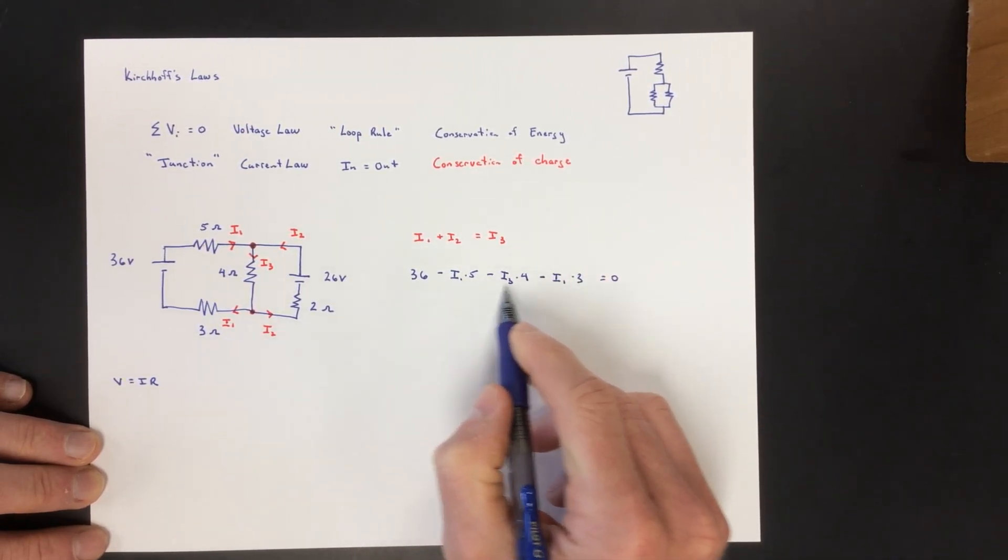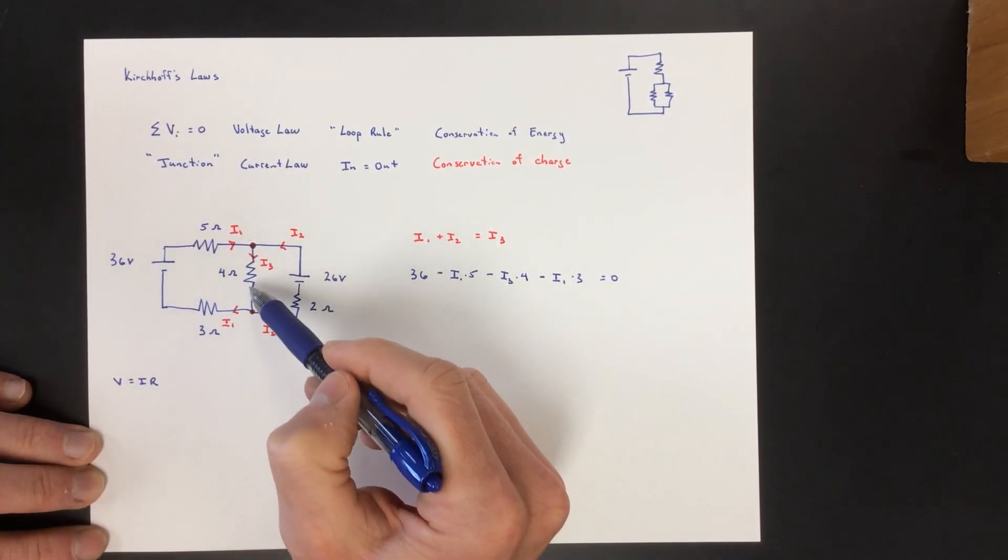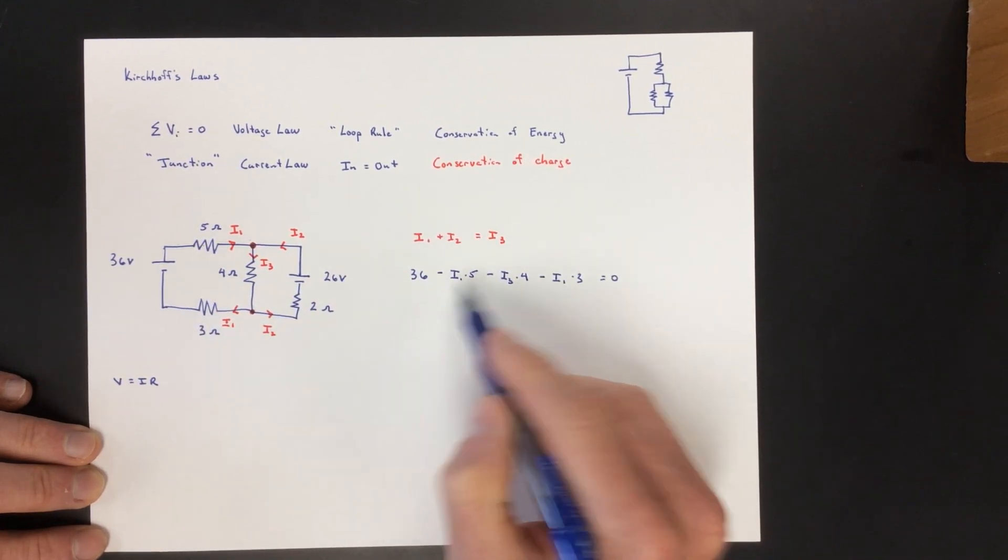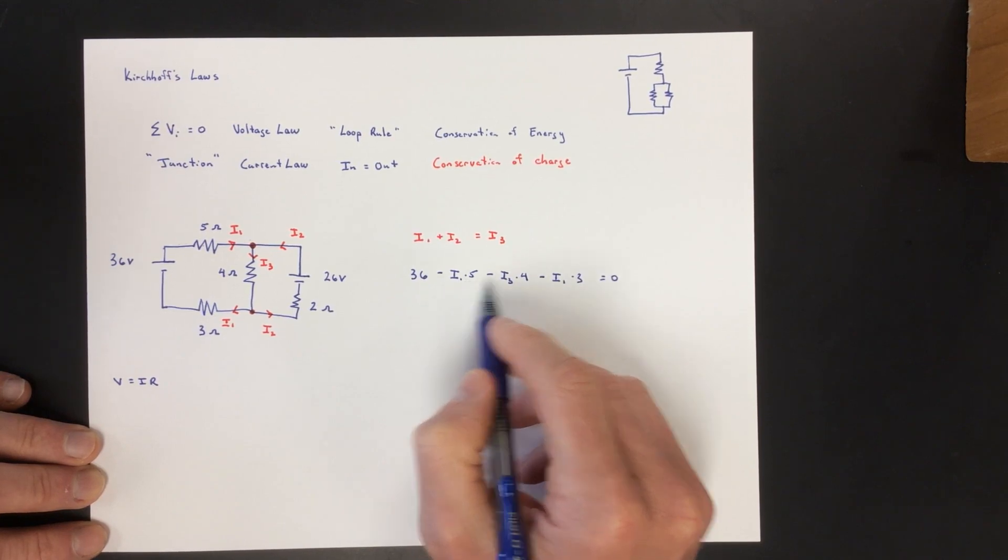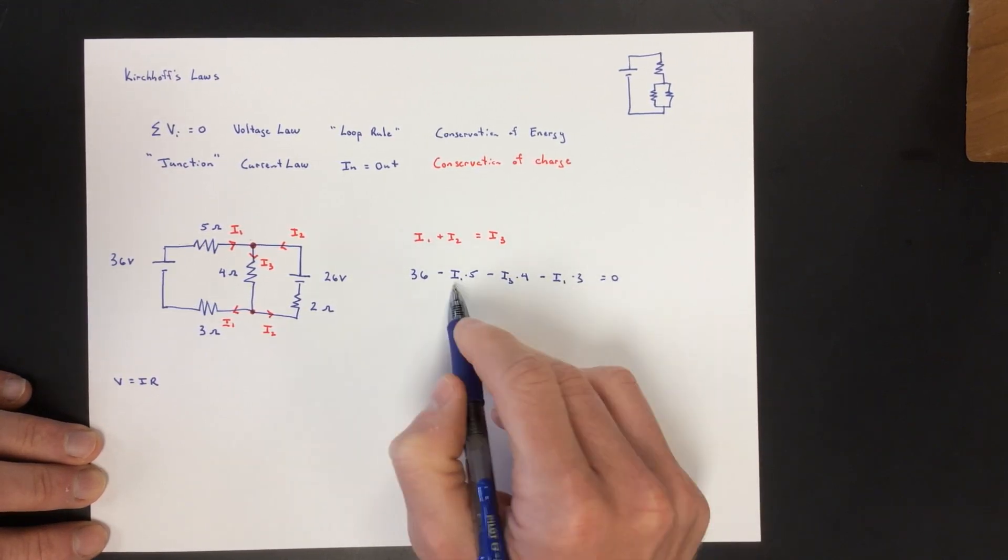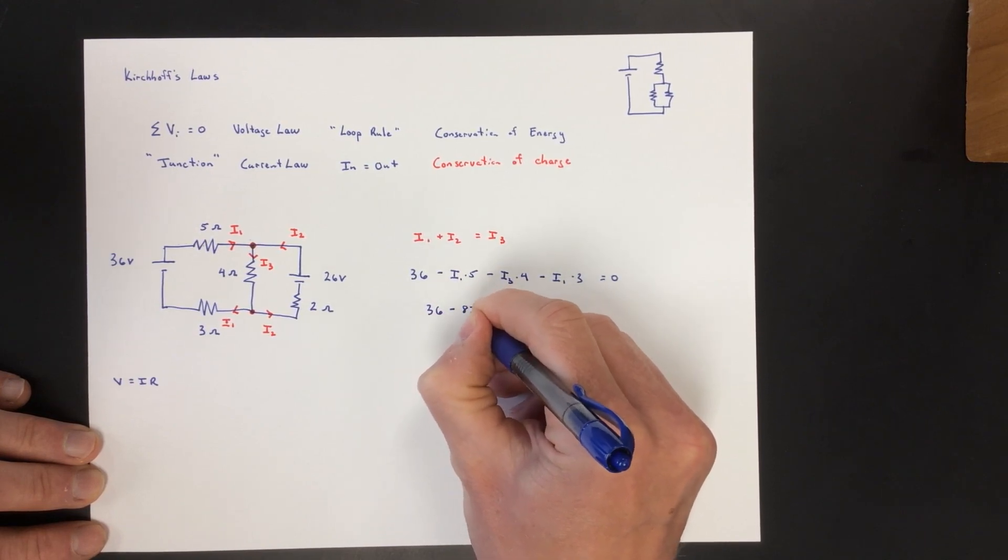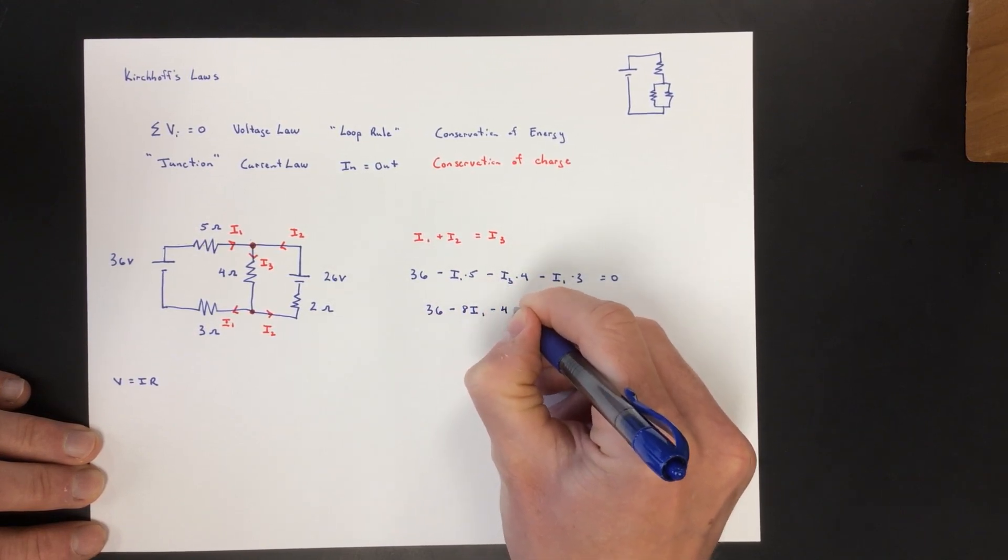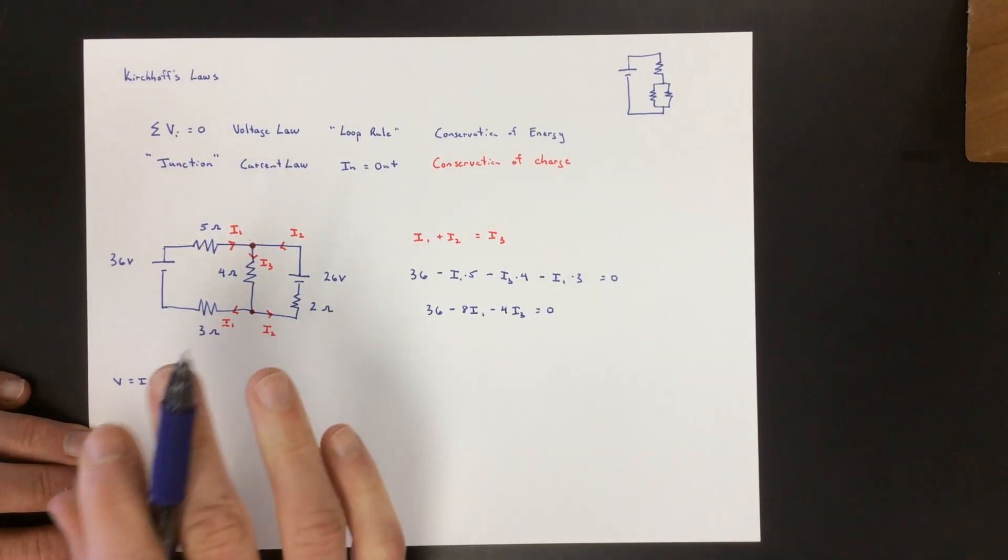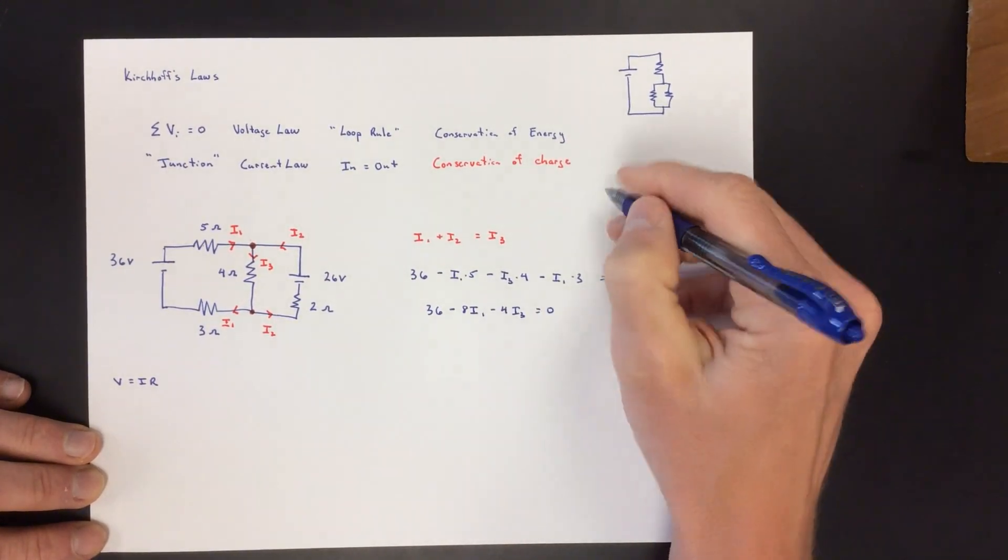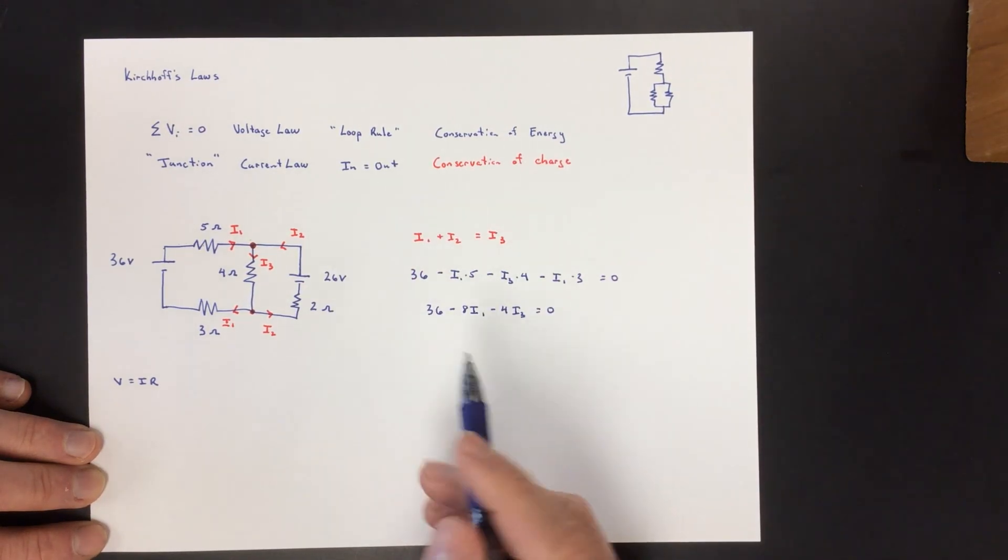The gains equal the losses, which is what the voltage law in the loop rule says. Gain, loss, loss, loss have to be equal, and that's the medium loop. I'm going to rewrite that. See how this is minus 5I1 and another minus 3I1? Those are actually the same current. So this is 36 minus 8I1 minus 4I3 equals 0. Now you can do one more equation. Think about how many variables you have here. You have three variables. You don't know I1, I2, and I3, but you know everything else.